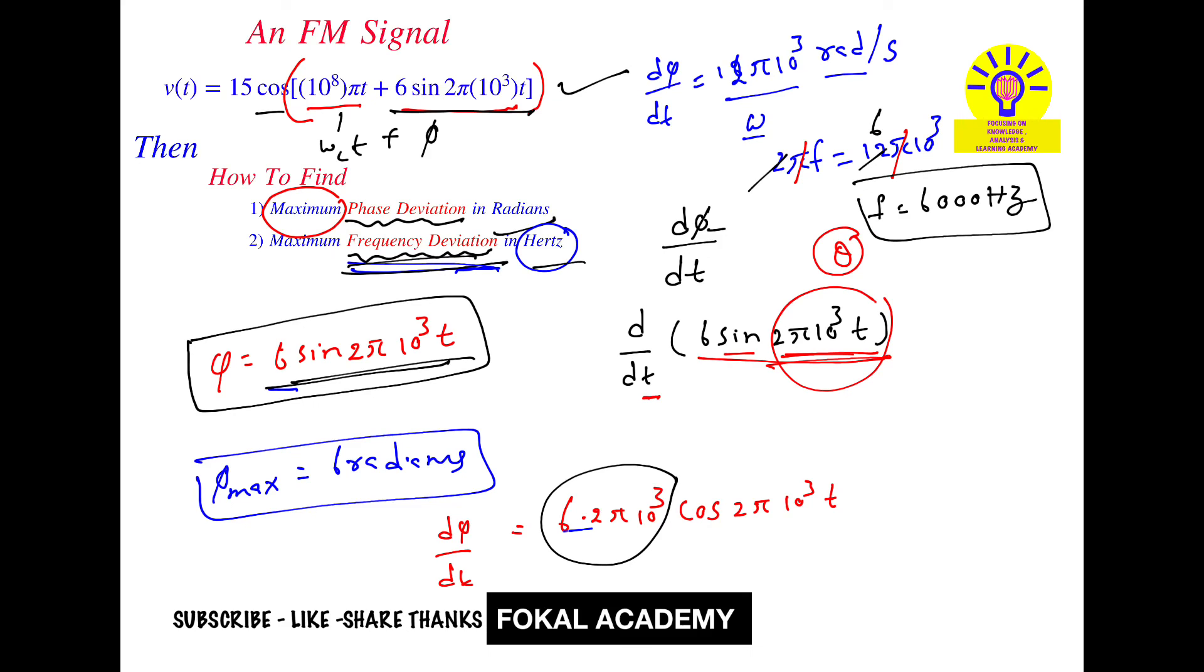Maximum phase deviation is 6 radians. So these are the required answers for the given problem. This is the process of simplification. Thanks for watching, please subscribe, like, and share. Thanks.